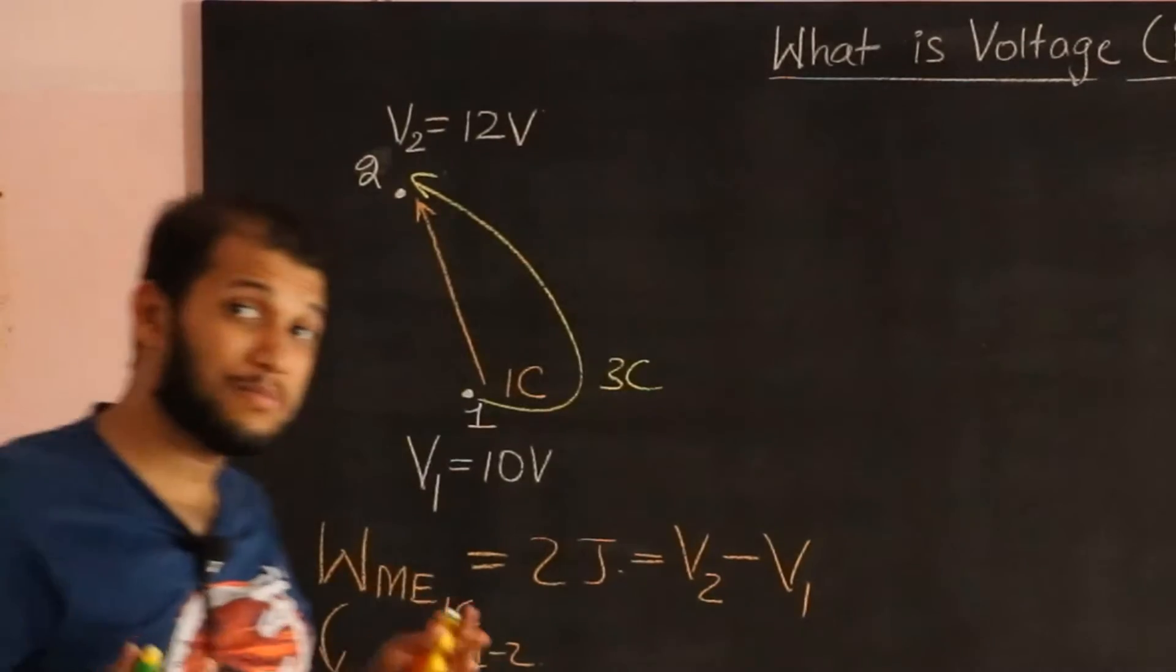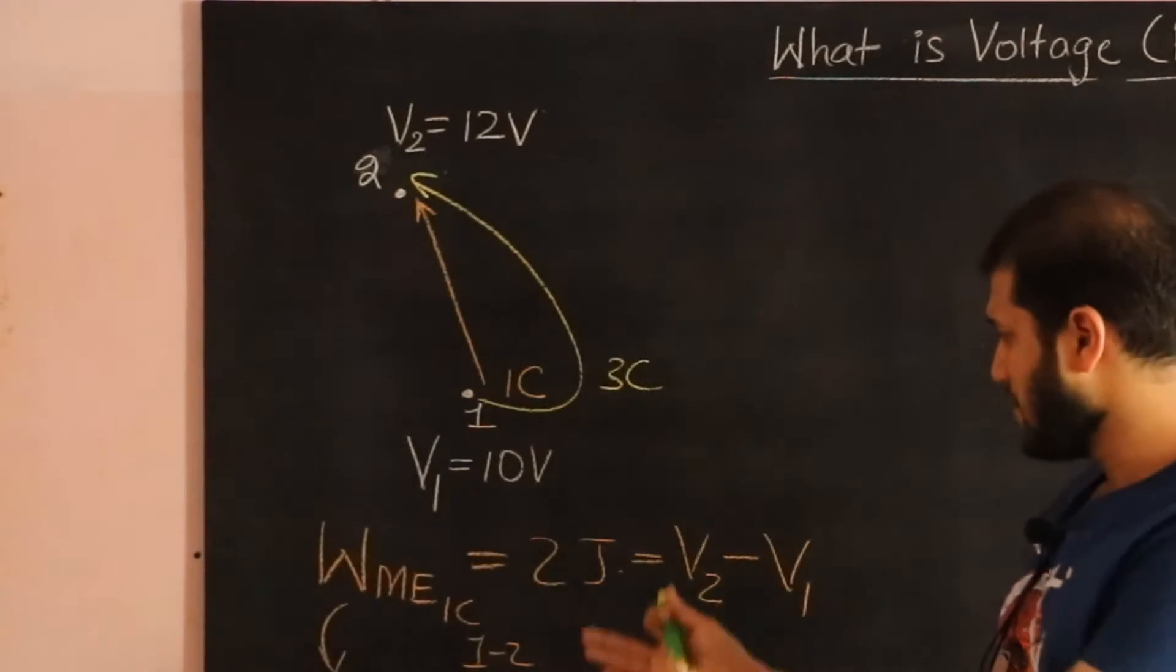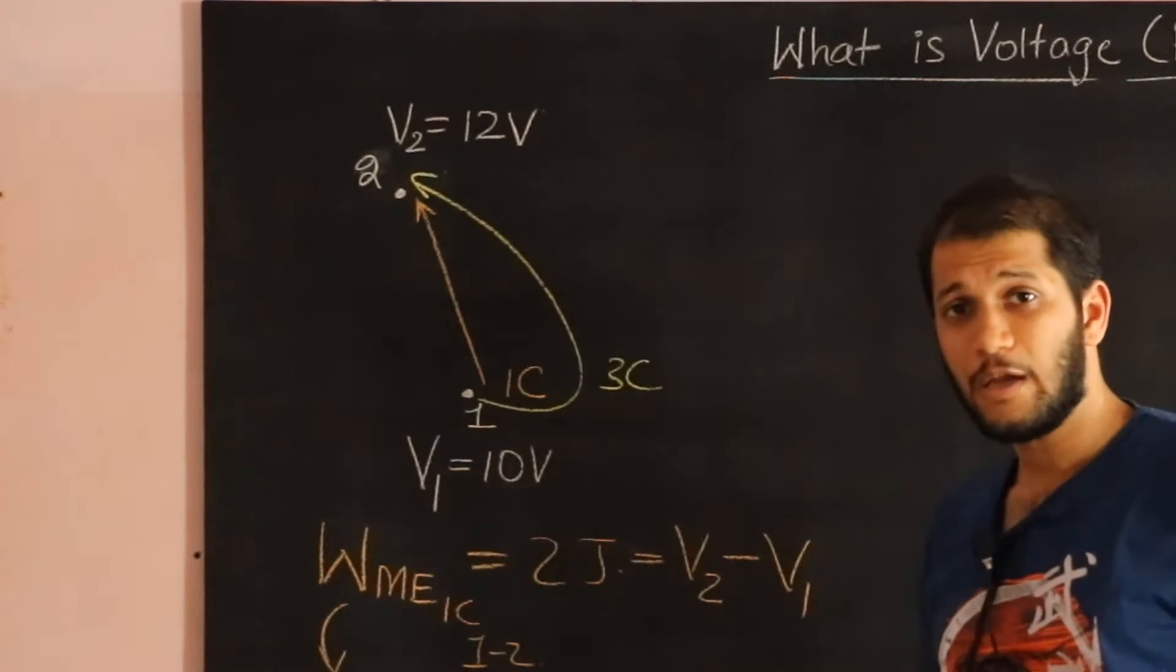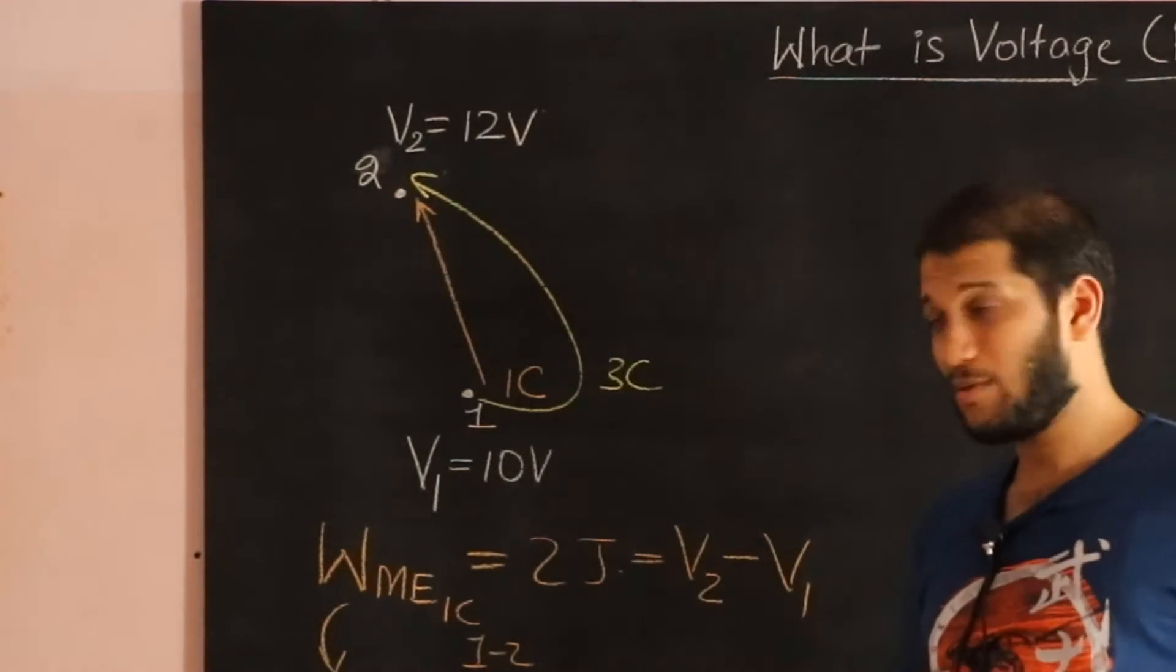What would the work done be then by me? I think that's clear. To move a coulomb I have to do 2 joules of work. To move 3 coulombs I have to do 3 times the work.